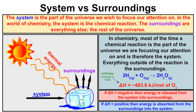The system is the part of the universe that we are focusing our attention on. Since we're focusing our attention on this ice cube, this ice cube is the system, and everything outside of this system is the surroundings — the part of the universe that is outside of the system.